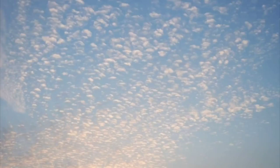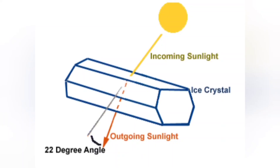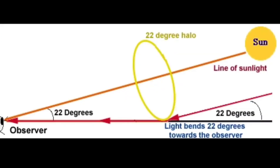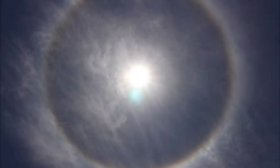When sunlight falls on these ice crystals, the high concentration of ice crystals causes more reflection, and that is why we can see a round circle around the sun. It is called the 22-degree halo because the circular halo formed around the sun or moon has a 22-degree apparent radius.